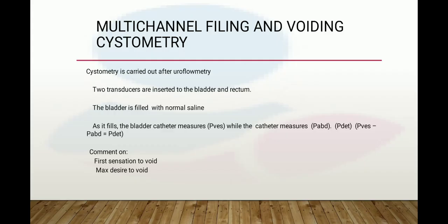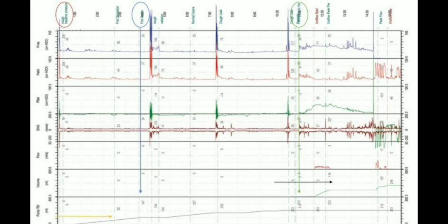Multichannel filling and voiding cystometry is carried out after uroflowmetry. Two transducers are inserted into the bladder and rectum. The bladder is filled with normal saline; a bladder catheter measures vesical pressure while a rectal catheter measures abdominal pressure. Detrusor pressure equals vesical pressure minus abdominal pressure. The patient comments on the first sensation to void and maximum desire to void.